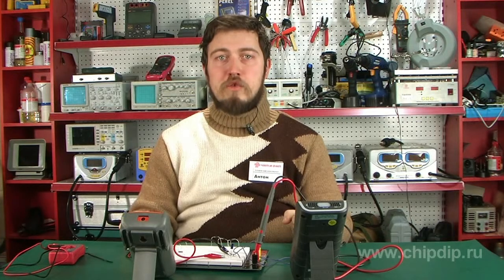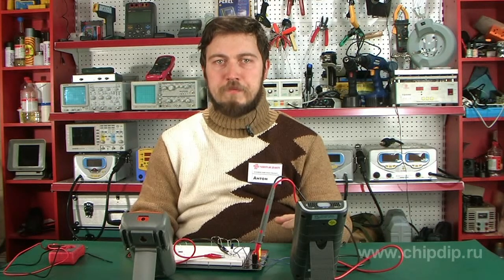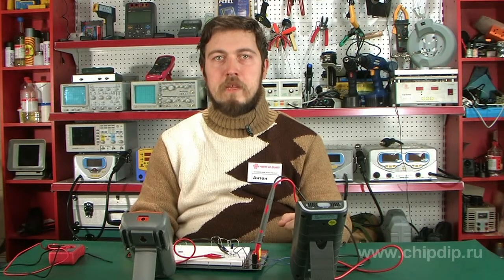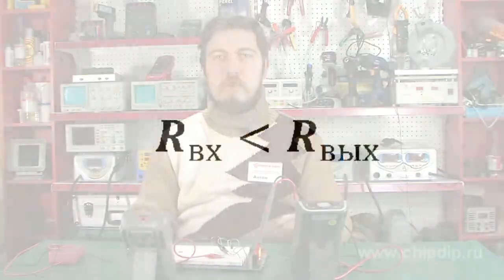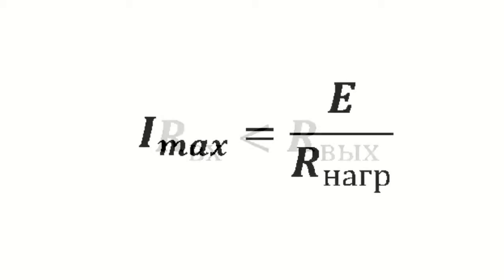Current matching is used to reach the maximum current in the load. The load input resistance is to be as low as possible in comparison to the source output resistance. The maximum permissible current in the load will equal the ratio of the source EMF to the load input resistance.